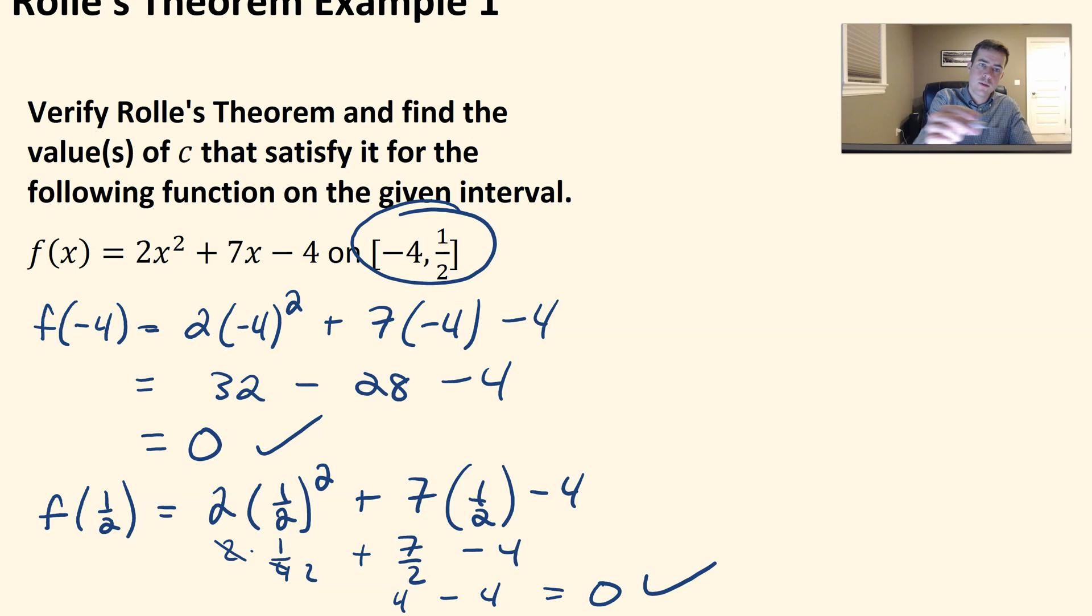So let's go ahead and take the derivative. So if I take the derivative of this, we get F prime of X is equal to 4X plus 7. Which means then we want to see where that equals 0, 4X plus 7.